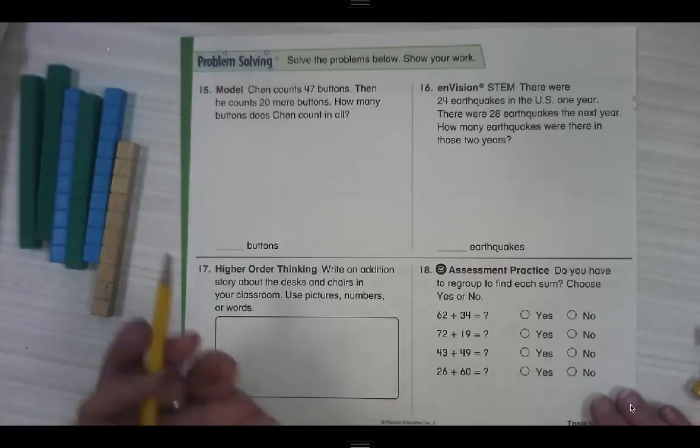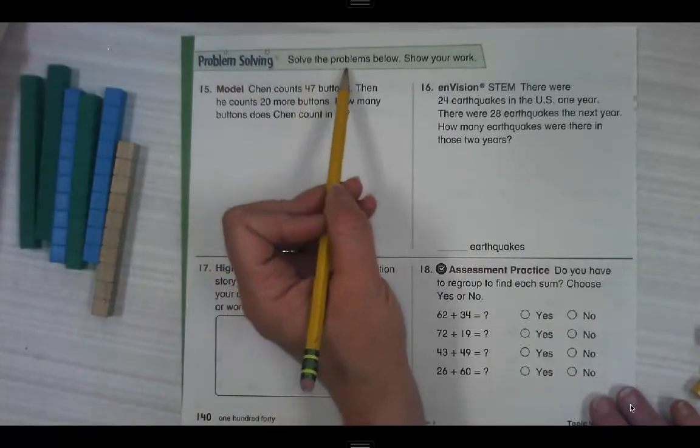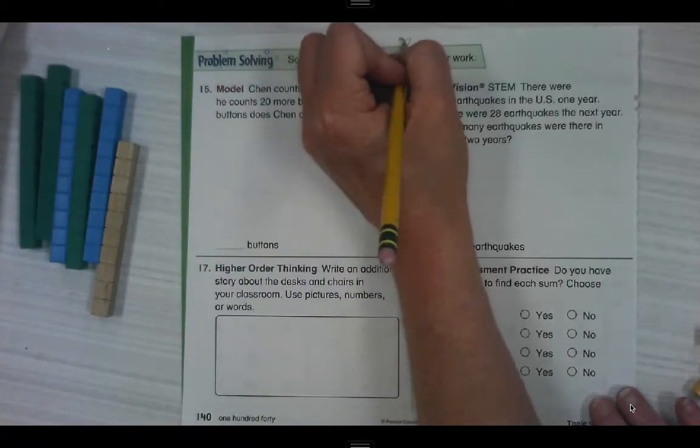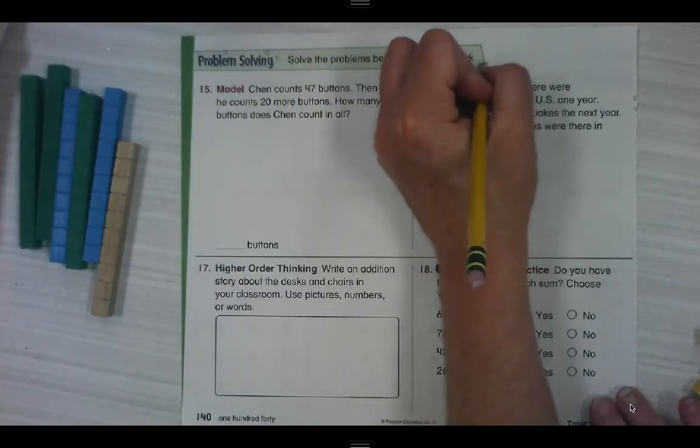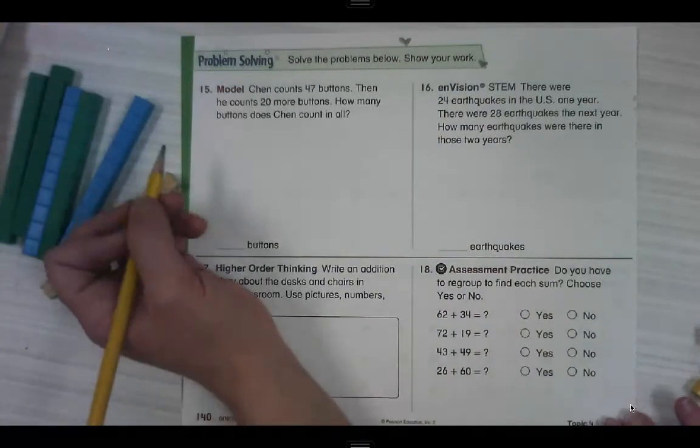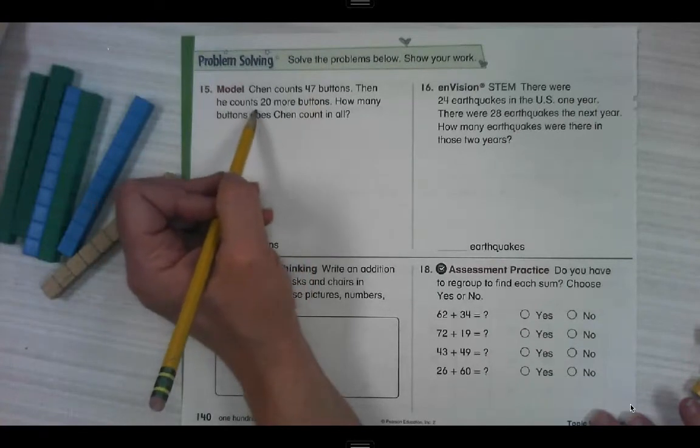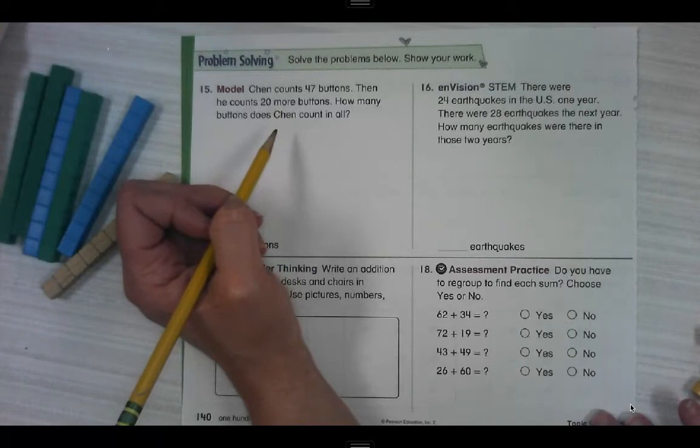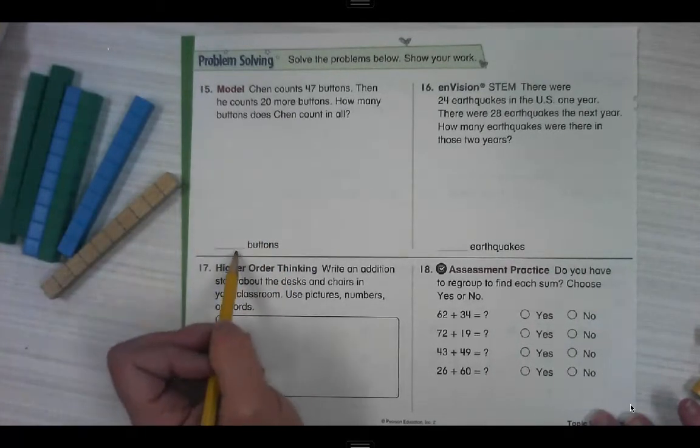Number 15, model. I like that because it means we're going to make a picture. It says solve the problems below and show your work. Show, show, show your work. All the live long day. All over your paper, please. Later we can play. Sorry, guys. Chen counts 47 buttons. Then he counts 20 more buttons. How many buttons does Chen count in all? Be sure to put your answer on the blank.